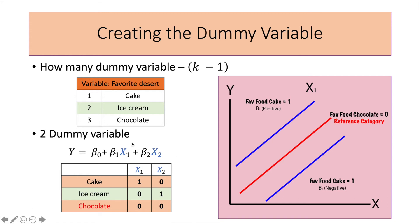For example, if you collect data from diabetic patients and want to see whether preference for a certain dessert impacts sugar level, then for x one, if the beta value is positive, it means those who consume cake have higher sugar readings compared to those who prefer chocolate. If the value is negative, those with a preference for cake have lower sugar readings compared to chocolate. There will be a similar interpretation for x two. That's how we do our dummy coding and interpret results.